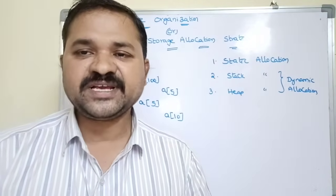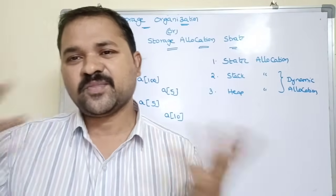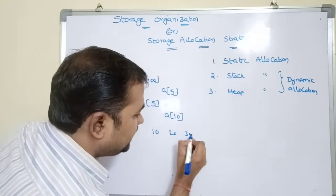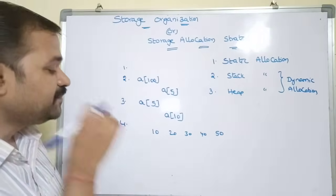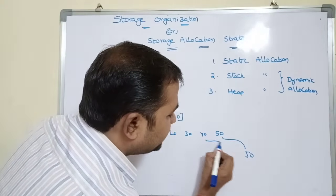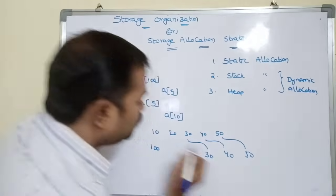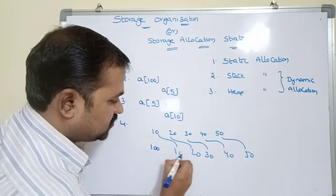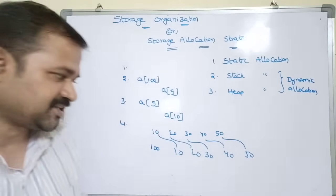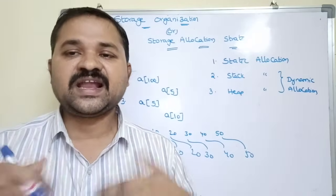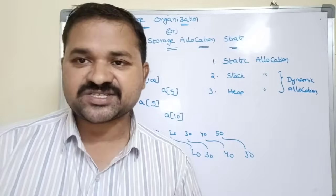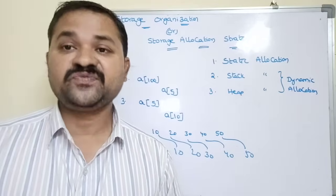Insertion and deletion operations are very expensive in static allocation because many elements need to be shifted. For example, with elements 10, 20, 30, 40, 50, inserting 100 at the beginning requires shifting all 5 elements one position to the right — that's 5 shifting operations. If the array contains 1 lakh elements, then 1 lakh shifting operations are needed, which is very expensive. Similarly, deletion is also very expensive.